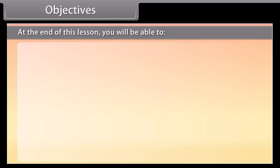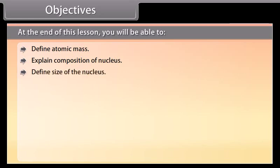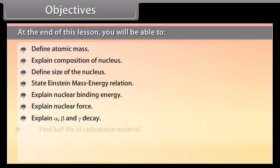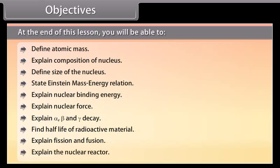Objectives. At the end of this lesson, you will be able to define atomic mass, explain composition of nucleus, define size of the nucleus, state Einstein mass energy relation, explain nuclear binding energy, explain nuclear force, explain alpha, beta and gamma decay, find half-life of radioactive material, explain fission and fusion, and explain the nuclear reactor.